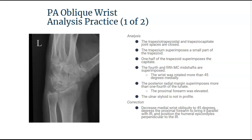Also, the posterior radial margin superimposes more than one-fourth of the lunate. This should let you know that the proximal forearm may have been elevated a little bit — it's not parallel with the IR like it should be. Everything should be parallel. And the ulnar styloid is not in profile. So we have excessive obliquity with a little bit of elevation from the proximal forearm. In order to correct this imaging error, we need to decrease that medial wrist obliquity to 45 degrees, make sure that the proximal forearm is parallel with the IR, and position the humeral epicondyle perpendicular to the IR.